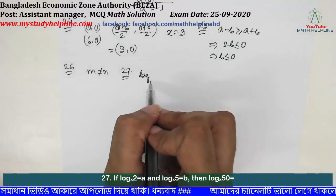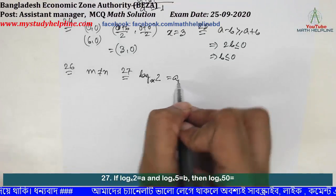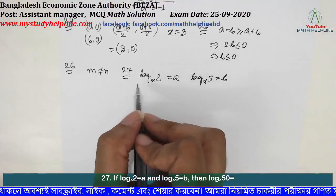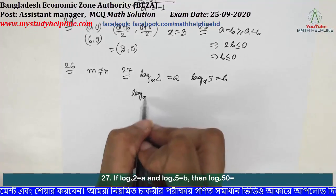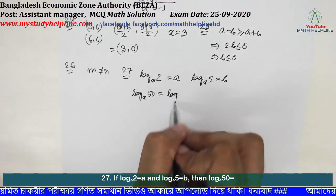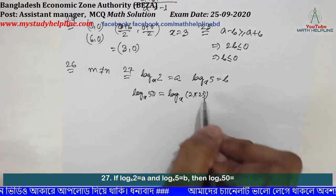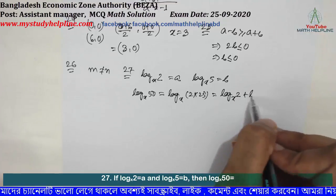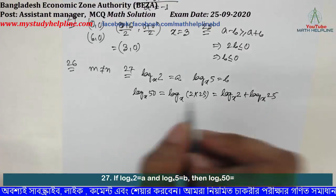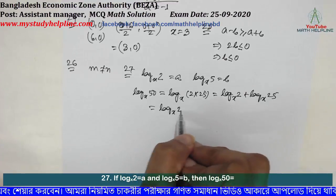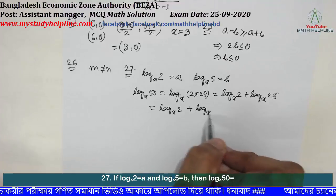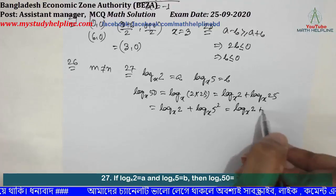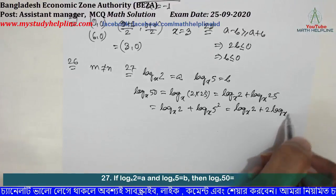If log x base 2 = a and log x base 5 = b, then log x base 50 = log x base 2 + log x base 25 = log x base 2 + log x base 5² = log x base 2 + 2 log x base 5, which equals a + 2b.